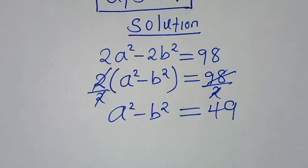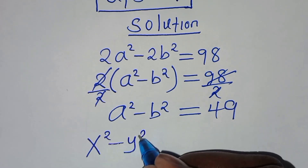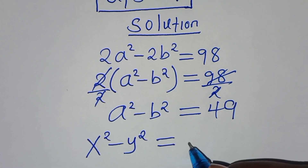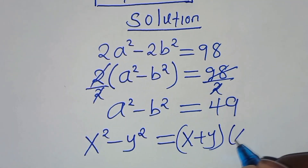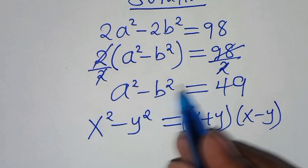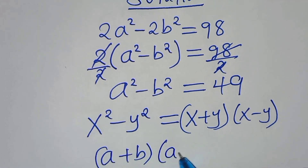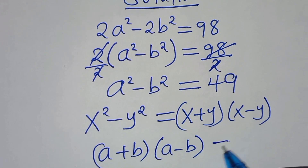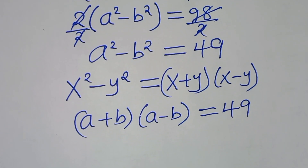The next step: a² minus b² is in the form of x² minus y², which is the difference of two squares. This can be expressed as (x + y)(x − y). So this implies we have (a + b)(a − b) equal to 49.